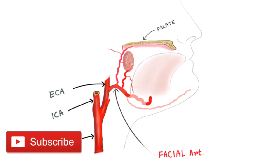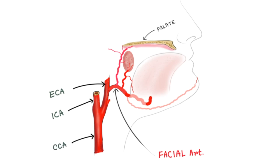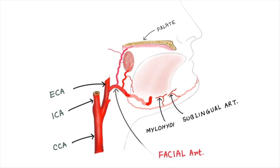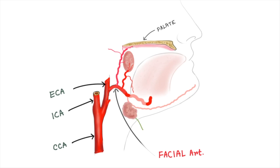The submental artery runs on the underside of the chin, forward upon the mylohyoid muscle, just below the body of the mandible and beneath the digastric muscle. It supplies the surrounding muscles and anastomoses with the sublingual artery and the mylohyoid branch of the inferior alveolar artery. It also supplies the skin of the submental area.